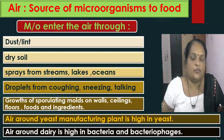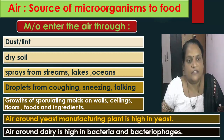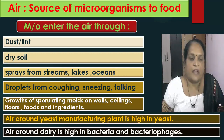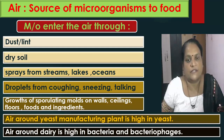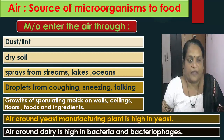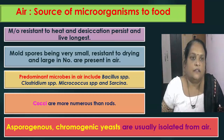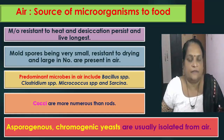Microorganisms enter the air through various sources like dust or lint, dry soil, sprays from streams, lakes and oceans, and through droplets from coughing, sneezing and talking. Microorganisms are also contributed to the air through the growth of sporulating molds on walls, ceilings, floors, foods and ingredients. Air around a yeast manufacturing plant is high in yeast. Air around a dairy is high in bacteria and bacteriophages. Microorganisms that are resistant to heat and desiccation live in the air for a longer duration.